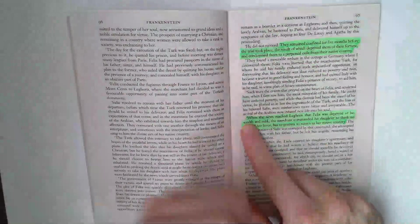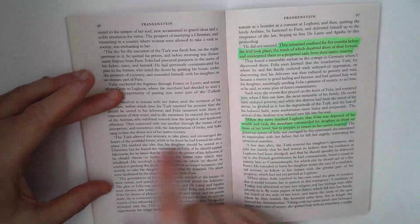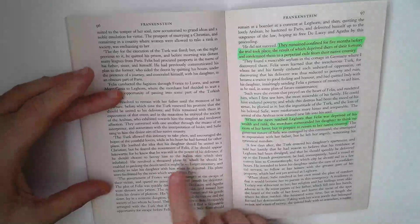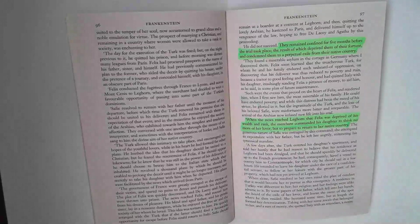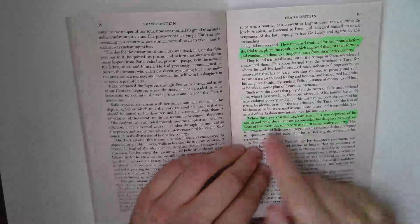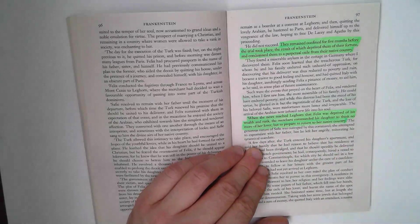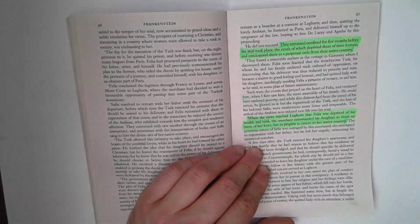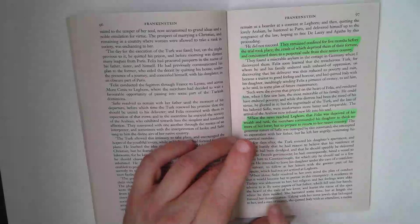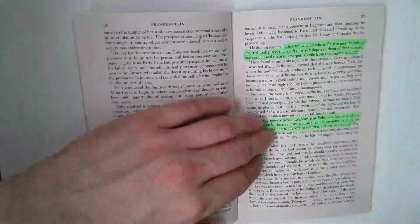Safi's father responds, was favorable to the marriage, but he did loathe the idea that his daughter should be united to a Christian, but he feared the resentment of Felix. Because they have lost their wealth and rank, the merchant commanded his daughter to think no more of her lover but to prepare to return to her native country. Safi's father refuses her the right to marry Felix and they're going to return to Turkey and Safi forms a plan to escape, which is quite fascinating. It shows this idea of going against her father's wishes.